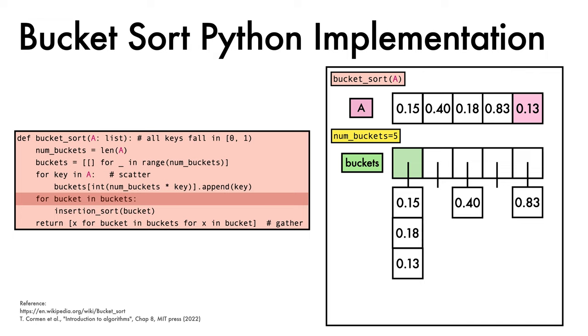We next move to the loop over the buckets. Starting from the zeroth bucket, we call insertion sort to sort its contents.